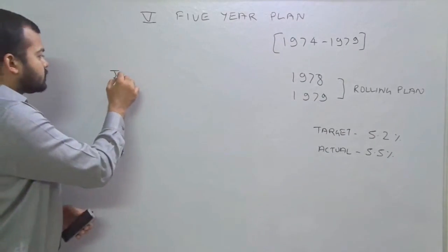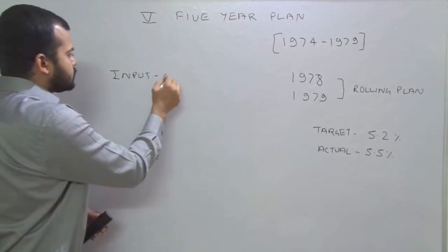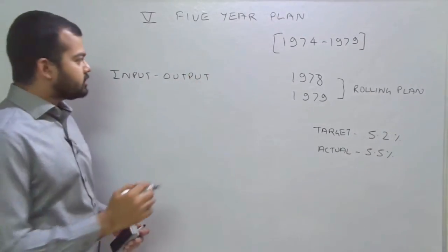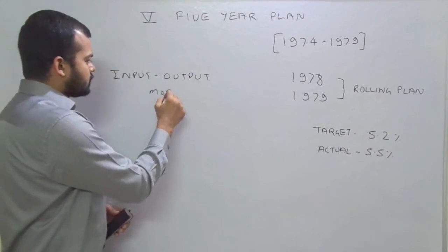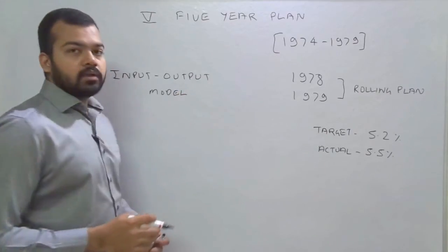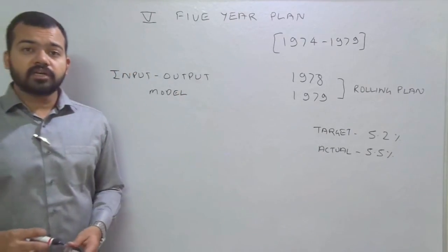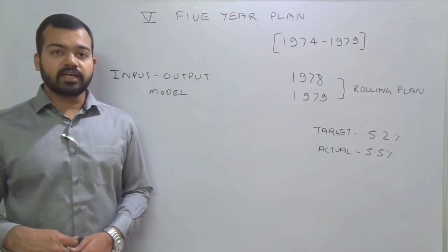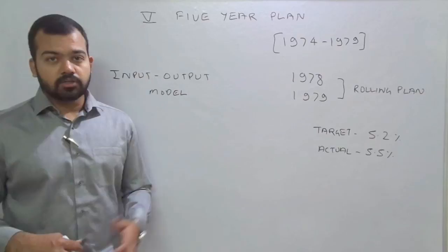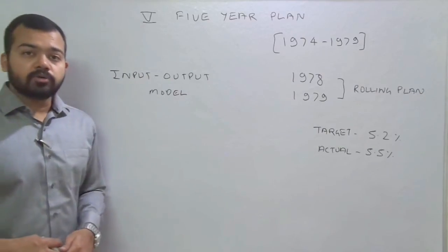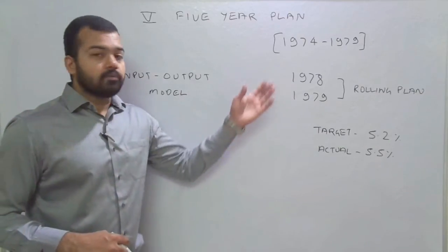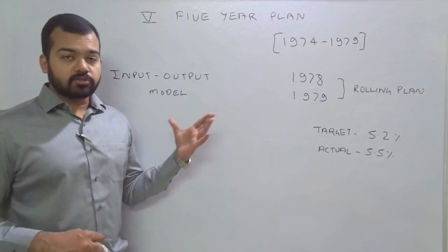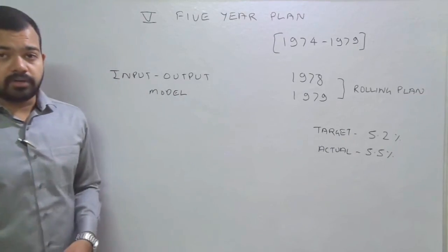This Five Year Plan was based on the input-output model. This model was given by the famous economist Wassily Leontief, who was awarded the Nobel Prize in Economics in 1973 for his contribution to the input-output model. Indian policy makers famously adopted this model for the plan.